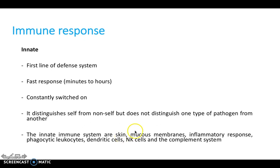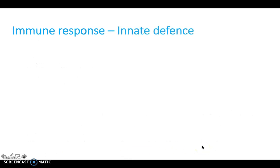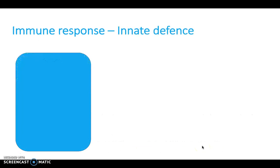The innate response includes things like skin, mucous membranes, our inflammatory response, phagocytic leukocytes, dendritic cells, natural killer cells, and the complement system. We'll have a little bit more of a look at these now.